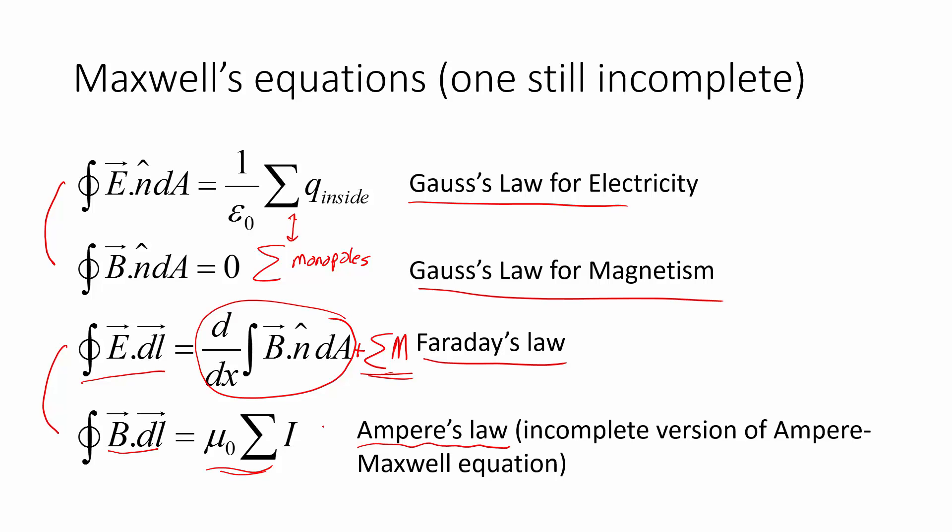So the electric field is changing. So he was already primed to think that there might be some sort of d by dx of the integral of the electric field dot normal vector over the area with probably some constant in front, because that would make these equations look symmetrical.